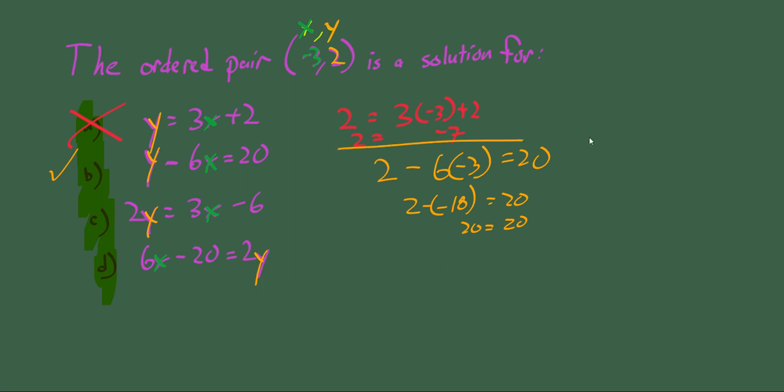Let's check the others just to be sure, though. Here we have 2y equals 3x minus 6. This is for C. 2 times y, which was 2, is equal to 3 times x, which was negative 3, minus 6. That's 4 equals negative 9 minus 6. Negative 9 minus 6 is going to be negative 15, and that is not 4.